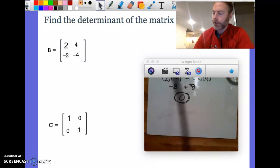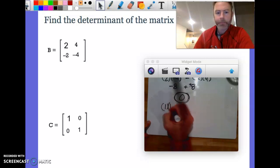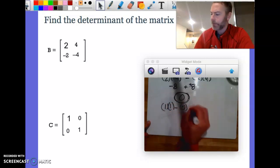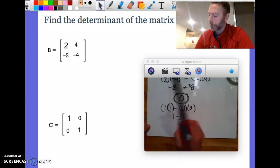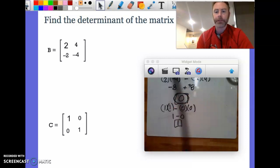Let's try one more here, letter C. The determinant: one times one minus zero times zero. This is one minus zero, which is one. Now, this is another special determinant number. These two are special determinant numbers. They tell us a couple different things.